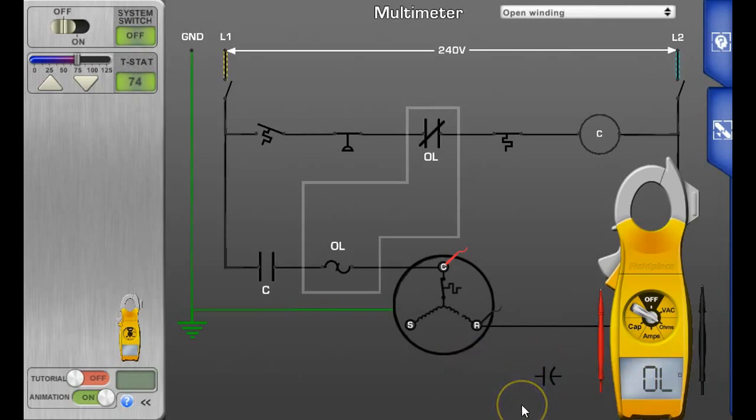That means the winding is possibly open, but the one thing you can't rush into is—let me draw it on here for you—we have the internal overload. If the compressor has overheated, that internal overload is going to open up and you're going to measure infinite resistance or an overload on your meter.